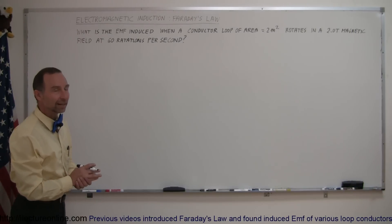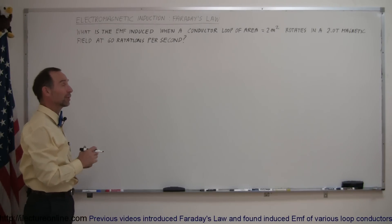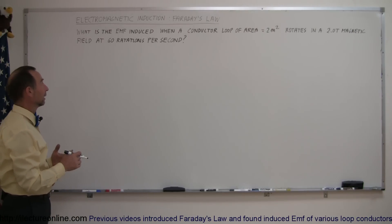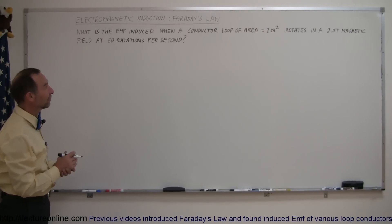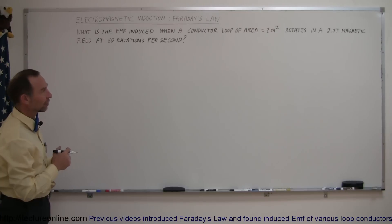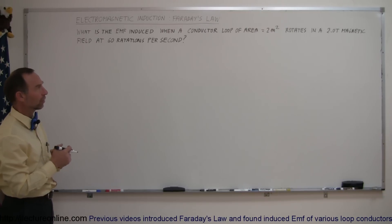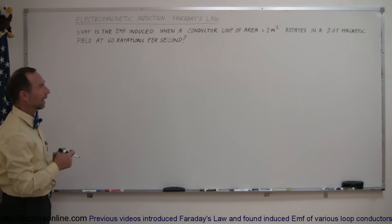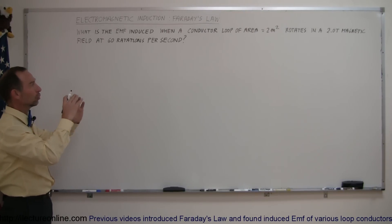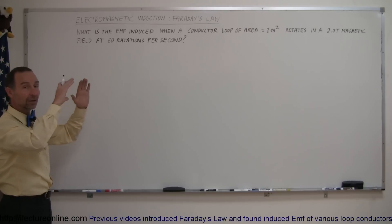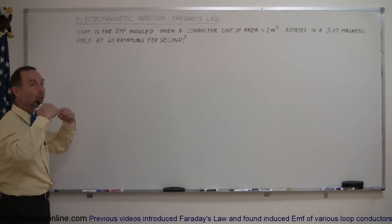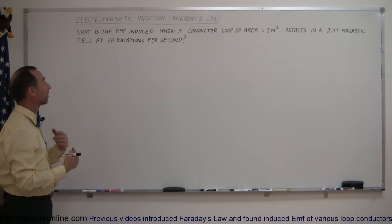Welcome to iLecture Online. Here we have a very interesting and practical example. We have a magnetic field with a strength of 2.0 teslas, and within that field we have a conductor loop with a cross-sectional area of 2 square meters, rotating in that magnetic field.